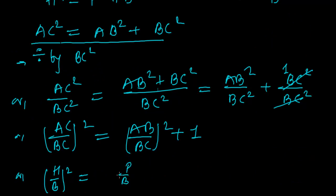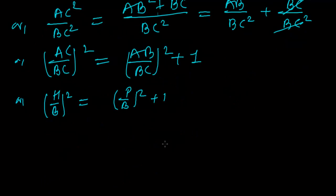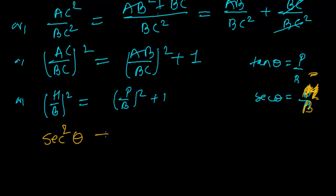We know that tan θ equals perpendicular over base, and sec θ equals hypotenuse over base. So we have to now apply these relationships. So in place of H upon B, I can now write sec²θ equals tan²θ plus 1.